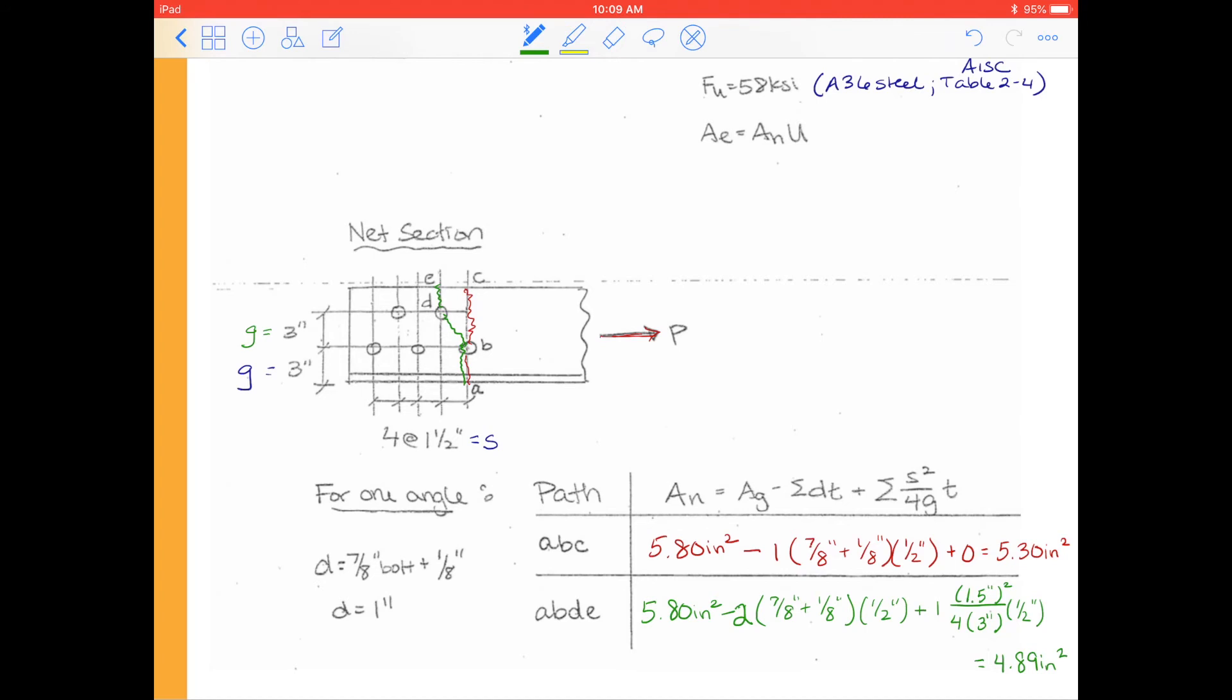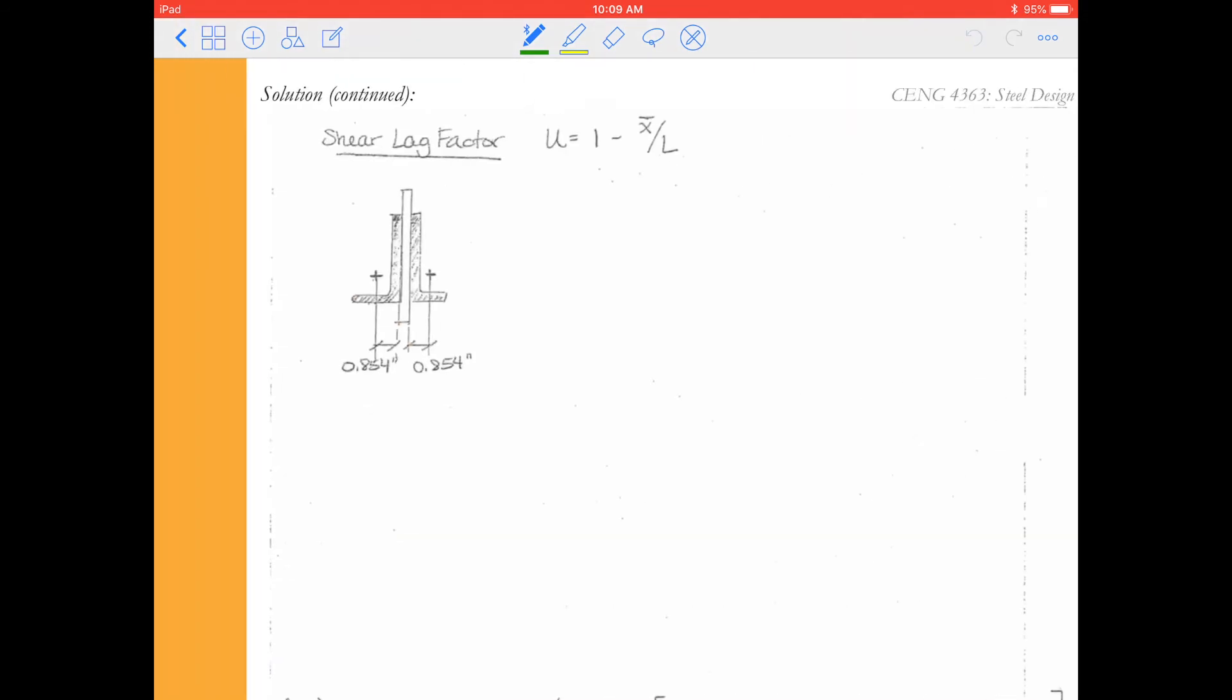We do our calculations here that this totals 4.89 inches squared. So it seems that our net area is going to be limited by path ABDE. And that's going to be 4.89 inches squared. Again, for one angle. Alright, so we can use that in our fracture calculation. Now because these are angle members, we also have to account for a shear lag factor. So if we move on to the next page in our notes, we have the shear lag factor.